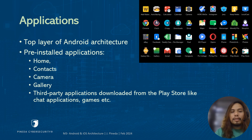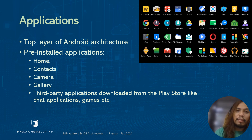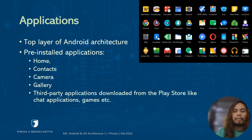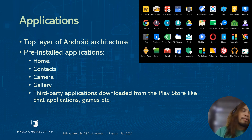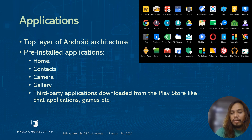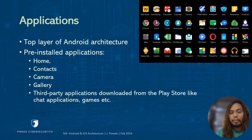The top layer in the Android architecture is the applications layer. This includes pre-installed applications such as home, contacts, camera, and gallery, as well as third-party applications that you download from the Play Store such as chat applications, games, and others. These are the apps that users directly interact with on the screen.